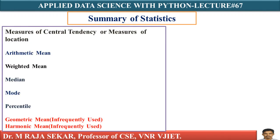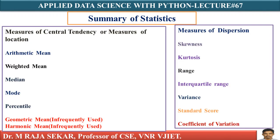Now, this is summary of statistics. There are measures of central tendencies like arithmetic mean, weighted mean, median, mode, percentile. Geometric mean and harmonic mean can also be considered as central tendency, but they are not that frequently used in many data analysis problems.